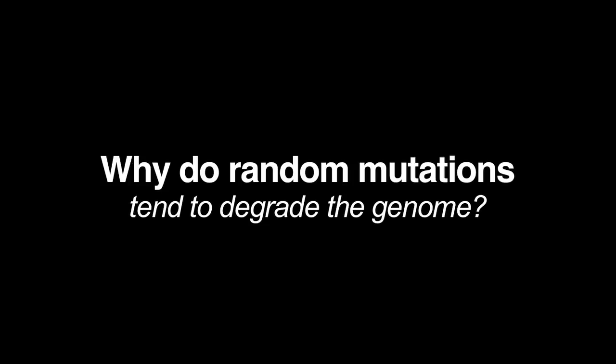The reason that random changes inevitably degrade the information in a DNA sequence is the same reason that random changes inevitably degrade information in a section of computer code or English text. For every sequence of 12 letters in the English language that does convey a meaning, there are 100 trillion other possible ways of arranging those same characters that don't. And the same thing turns out to be true in the DNA-protein case.